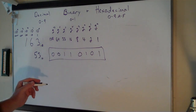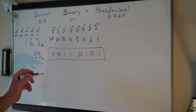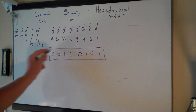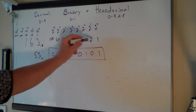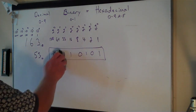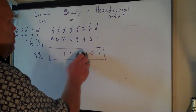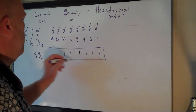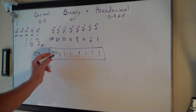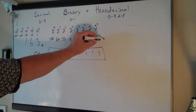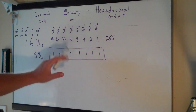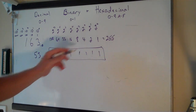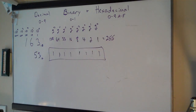With an 8-bit byte, if you add all the bit values up when they're all 1s, you would get 255. So with an 8-bit byte you can represent numbers anywhere from 0 to 255. That's your limit.